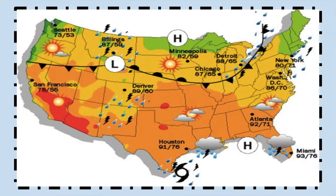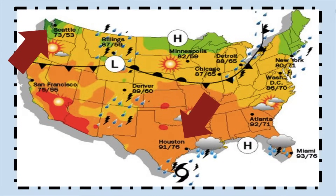Here's an example of a weather map. If I look at Seattle, Washington, I see that it's going to be partly sunny, high of 73, low of 53. If I look at Houston, Texas, I see that we have showers and thunderstorms with a high of 91 and a low of 76. And if I go to New York City, I can plan on precipitation, a high of 80 and a low of 71. A weather map is pretty cool.